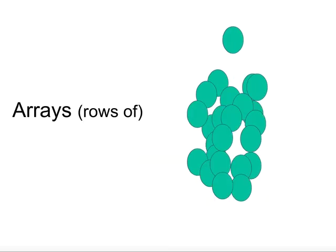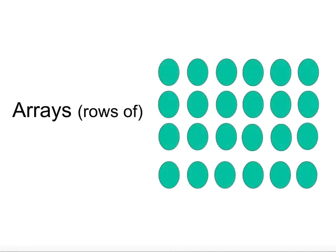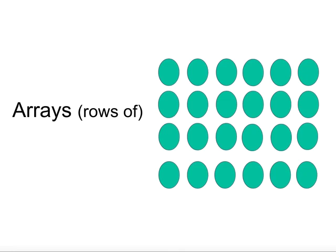Array diagrams also help us to see the solution. This is four rows of six counters, or 4 multiplied by 6, which equals 24. By looking at the rows, we can see 24 divided by 4 equals 6 in each row. If I now look at the columns, it shows 24 divided by 6 equals 4.